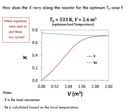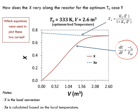Note that x here is the local conversion at a given location in the reactor, and x_e is the local equilibrium conversion calculated based on the local temperature at that same location. The design equation was used to plot x versus V, the k_c expression was used to plot x_e, and the energy balance was used to define the local temperature.